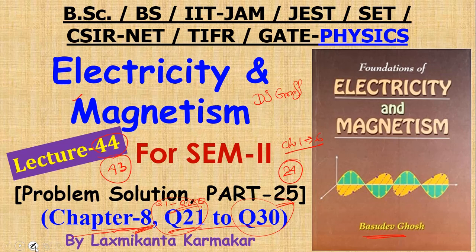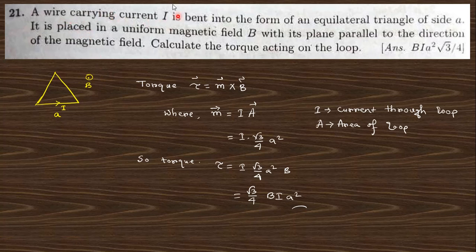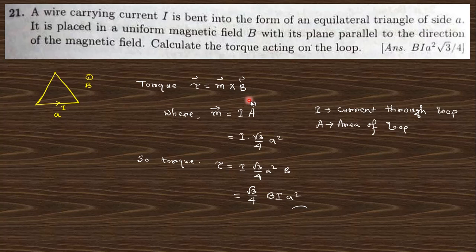Question number 21: A wire carrying a current I is bent in the form of an equilateral triangle of side A. It is placed in a uniform magnetic field B with its plane parallel to the direction of the magnetic field. Calculate the torque acting on it. The torque is the magnetic moment cross B, and magnetic moment is I into A, where area is (√3/4)a². Since they are parallel, sine 90° = 1, so the magnitude is τ = (√3/4)a²IB.